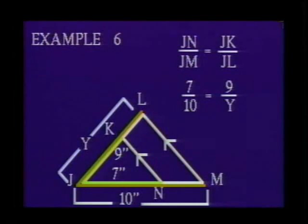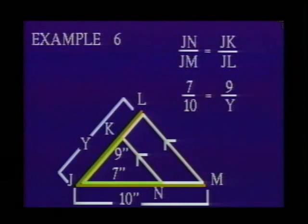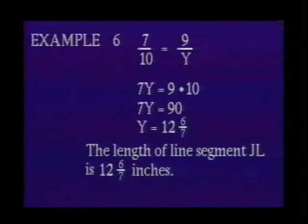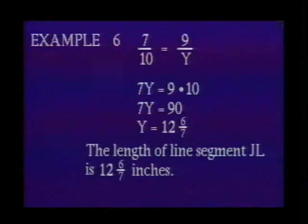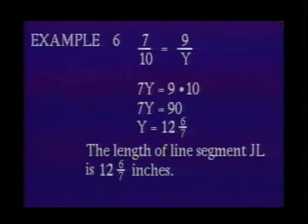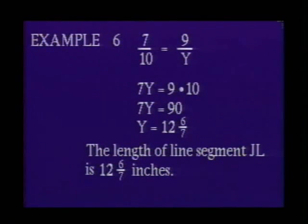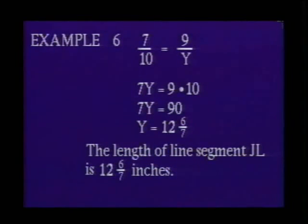Let Y equal the length of line segment JL. Beginning with the ratio of the length of JN to the length of JM, we have 7 to 10. The ratio of JK to JL — 9 to Y — will be the same. This gives the proportion: 7 is to 10 as 9 is to Y. Solving, Y = 12 and 6/7. Thus the length of line segment JL is 12 and 6/7 inches.